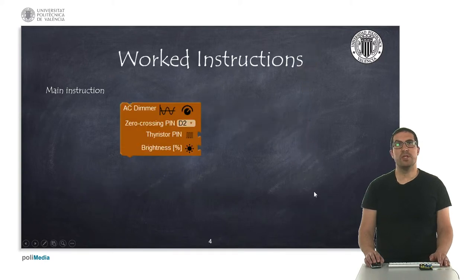In this presentation we are just simply using one single instruction, which is the AC dimmer and this instruction basically what it's doing is, if we have an AC voltage like we see here in the picture...